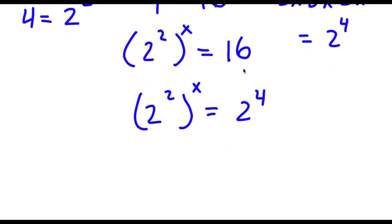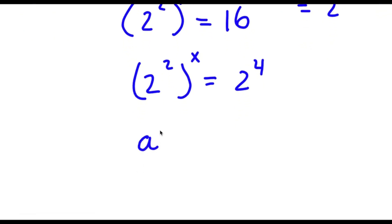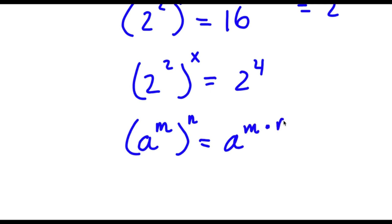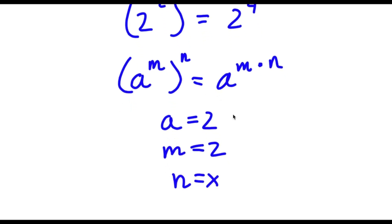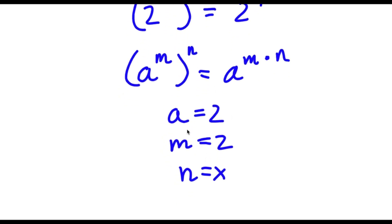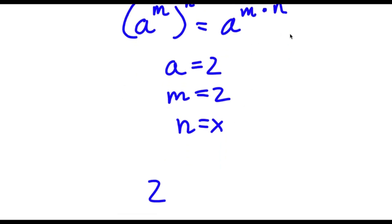Now if I have something in the form a to the power of m to the power of n, this is the same thing as a to the power of m times n. So in the case of 2 to the power of 2 to the power of x, we can think of a as 2, m as 2, and n as x. So this equals 2 to the power of m times n, which is 2 times x, the same thing as 2 to the power of 2x.